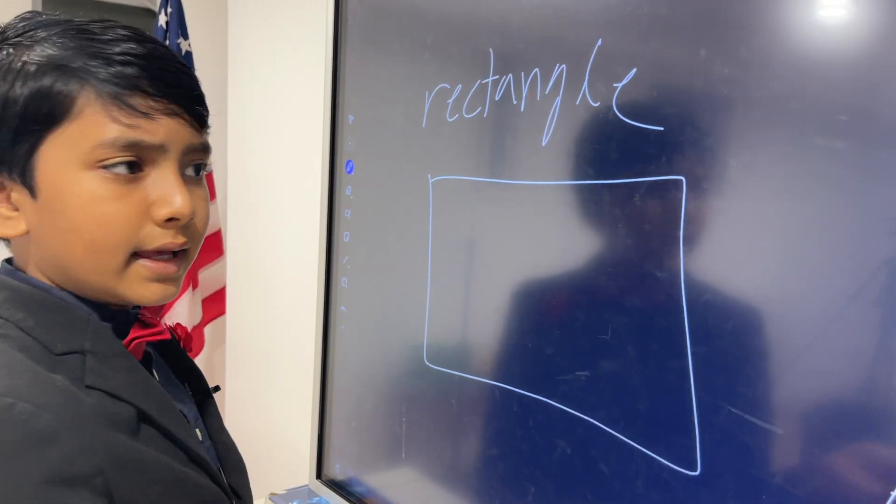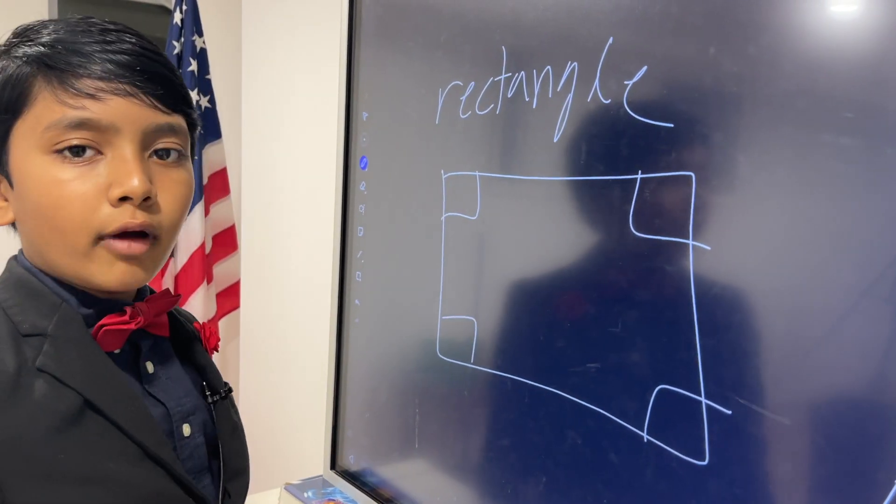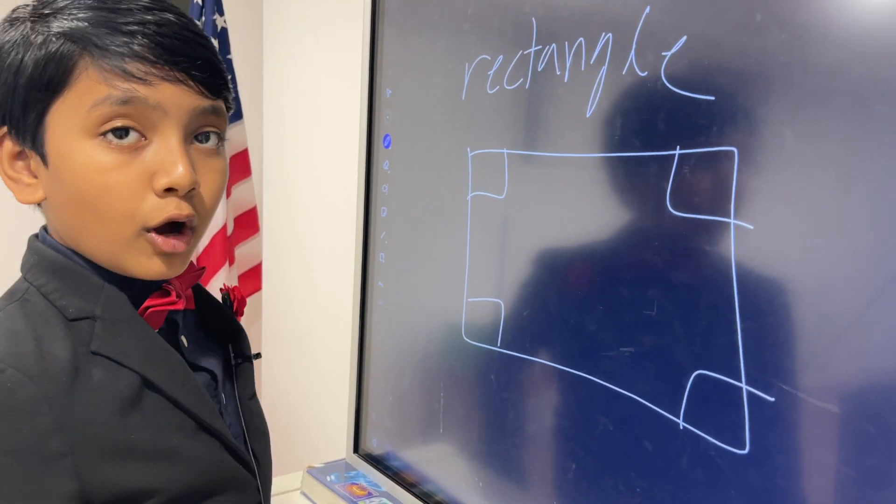All right, what about the rectangle? Well, the rectangle has four right angles. They will always have four right angles. That's the defining property of them.